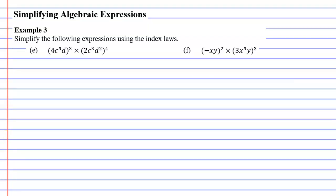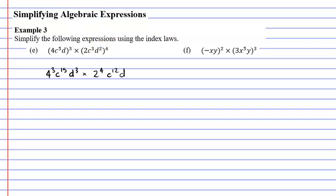Let's now move on to question E. Starting with the first set of brackets, everything inside needs to be applied to the power of 3. So I'm going to put 4 to the power of 3, C to the power of 15 because 5 times 3 is 15, and D to the power of 3. For the second set of brackets, everything needs to be put to the power of 4. So 2 to the power of 4, then C already has a power of 3 so we go 3 times 4 which is 12, giving C to the power of 12. Then D already has a power of 2, so 2 times 4 is 8, giving D to the power of 8.